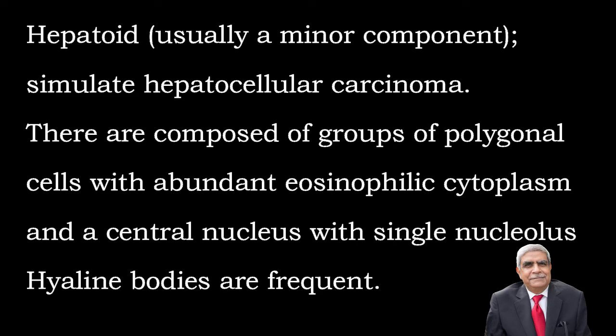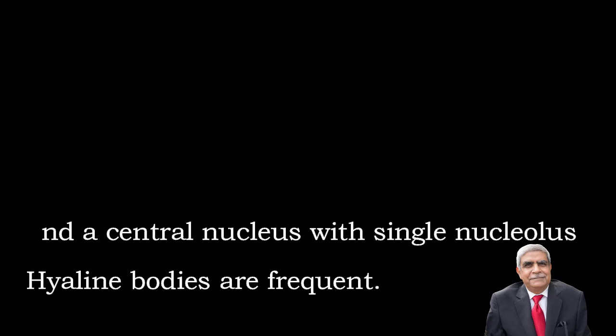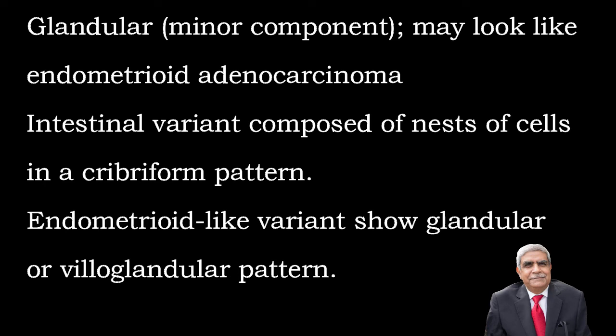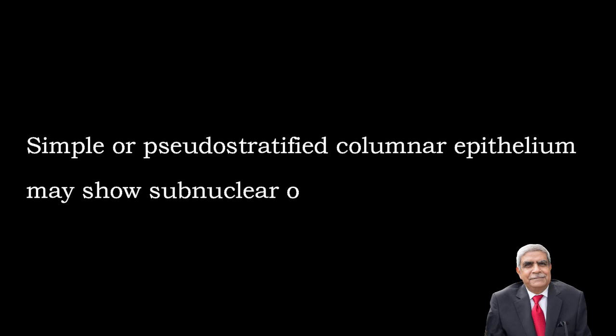In the hepatoid pattern there are groups of polygonal cells with abundant eosinophilic cytoplasm and clear nucleus with a single nucleolus. Hyaline bodies are frequently present. The glandular component may look like endometrioid carcinoma. The intestinal variant is composed of nests of cells in a cribriform pattern. The endometrioid-like variant shows glandular or villous-glandular pattern.